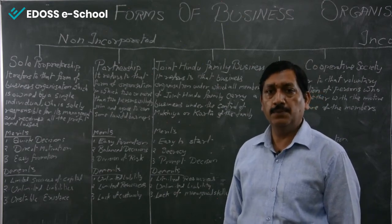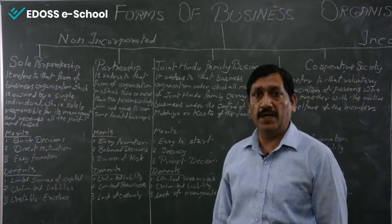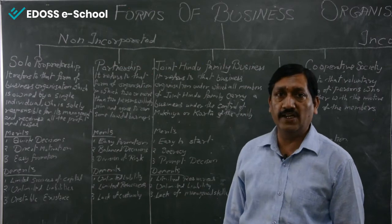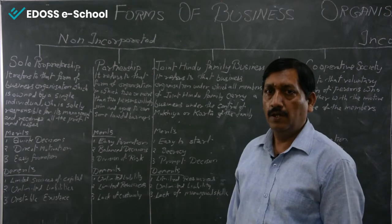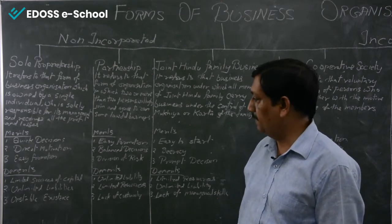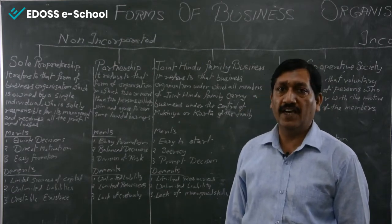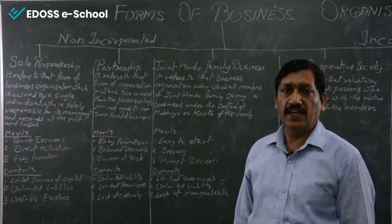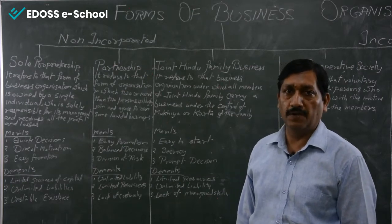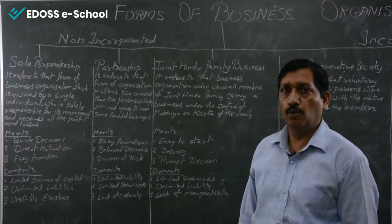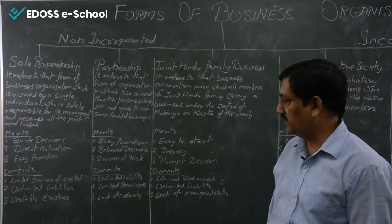Merits of partnership: Easy formation — minimum two members are required and maximum one hundred members can be there. Balanced decision-making — all decisions are taken jointly; no single individual can decide alone. Division of risk — unlike sole proprietorship where all risk lies with one person, in partnership the loss is divided between all partners in the agreed ratio.